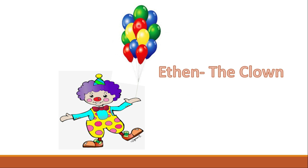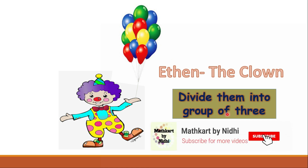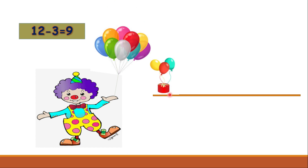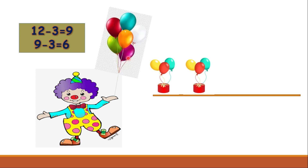Look, he has 12 colorful balloons in his hand and he has to divide them into groups of three. He ties three balloons from 12, and now he has how many balloons left? Yes — 12 minus 3 equals 9. So he has 9 balloons left in his hand.